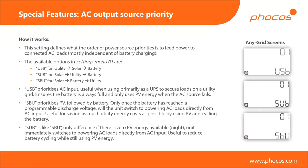Now for some better understanding, let's look at some of the special features of the anygrid devices. The first one is a closer look at the AC output source priority. There's a lot of text on this slide, but it's provided so that when this presentation is sent as a PDF, you can use it to look things up later. The AC output source priority needs some explanation so you understand how the unit decides on various priorities. We have three options: USB, SUB, and SBU, and those acronyms stand for the order of priority.